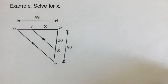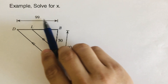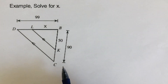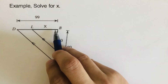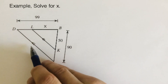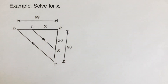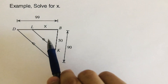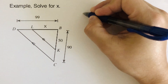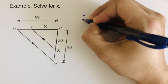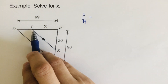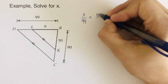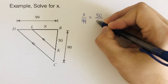Let's take this example. We have X and the whole thing is 99, and we're looking for X. These two lines are parallel, so we use the same formula. That would be X over 99 is equal to — that's the first part over the whole thing — 50 over 90.